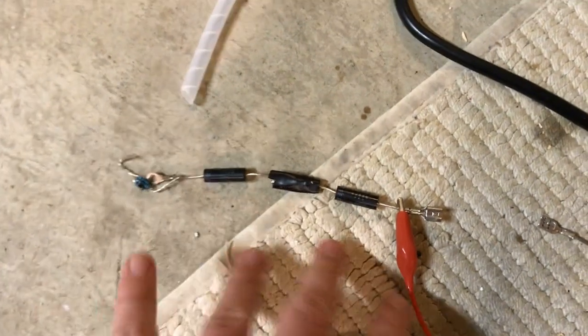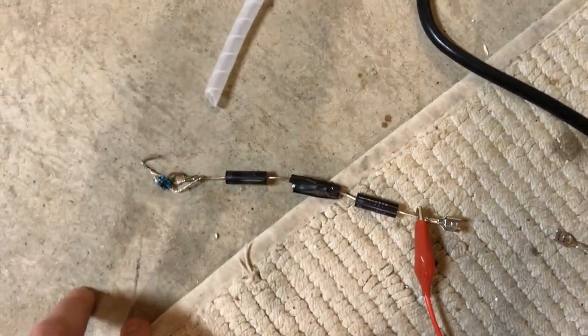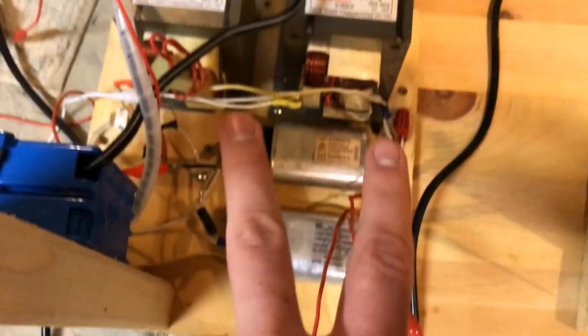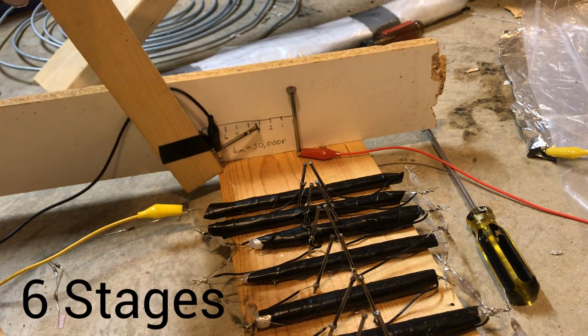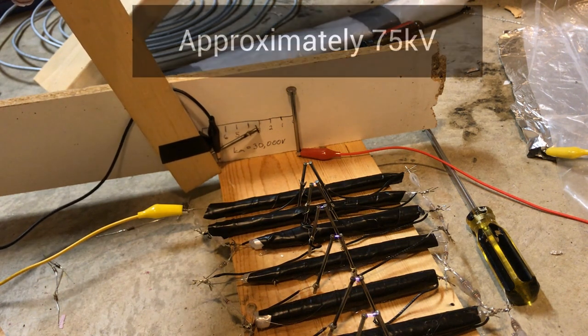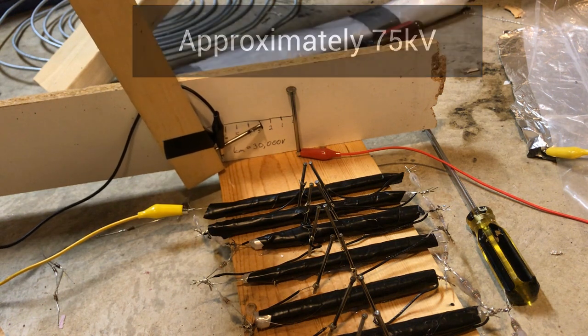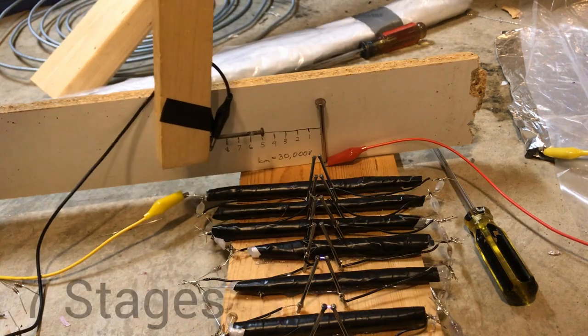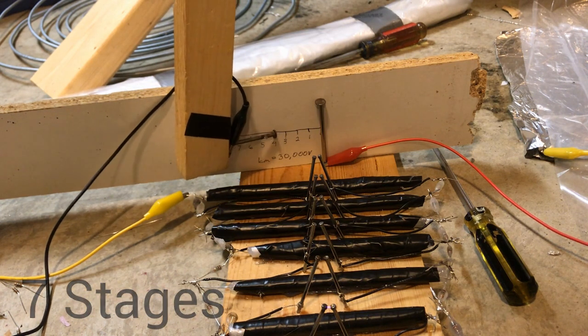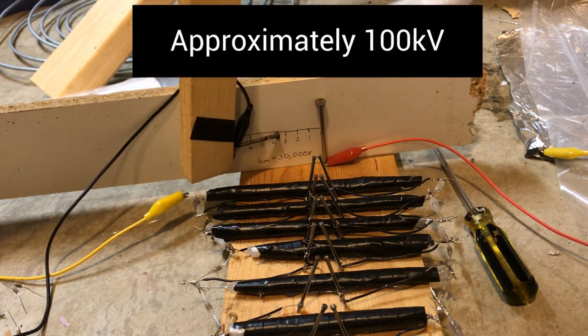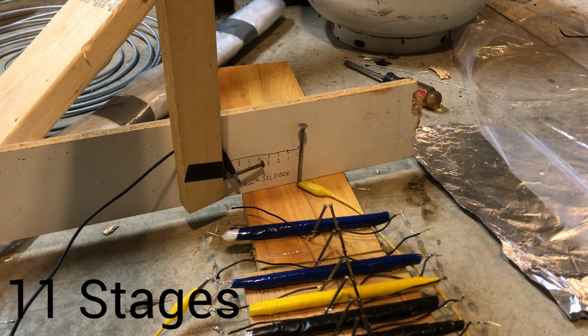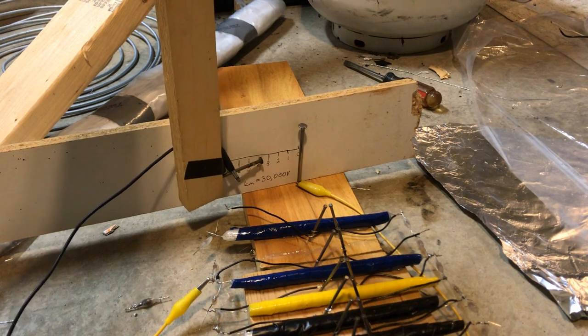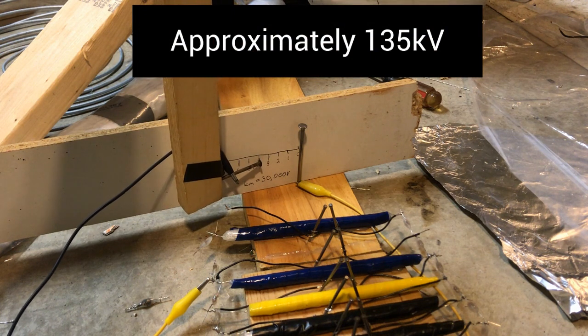So in total this should turn the 4,000 volts AC coming off the two microwave oven transformers in series and turn that into 4,000 volts DC for our use. So let's do this.